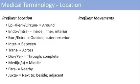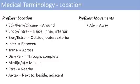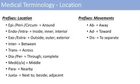The next prefixes involve movements. The first one is ab, which means away. When you abduct your arms, you're moving your arms away from your body — abduction is an easy way to remember ab for away. The next one is ad, which means towards — adducting your arms means bringing your arms in towards your body; that's adduction. The next one is dis, meaning to separate — just think of displace, where you're separating something out.